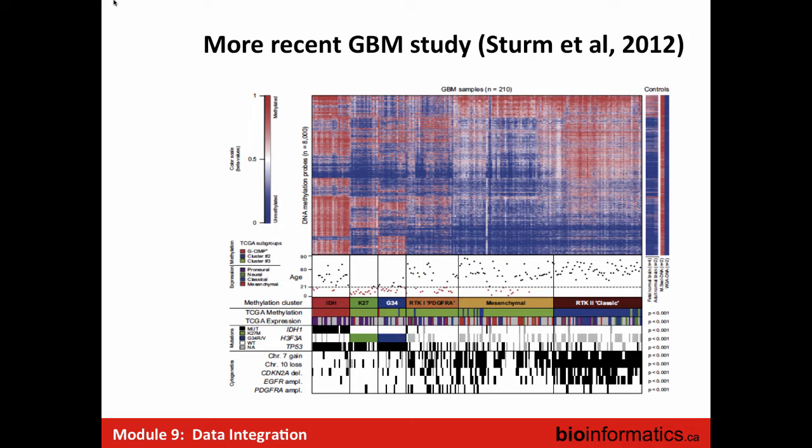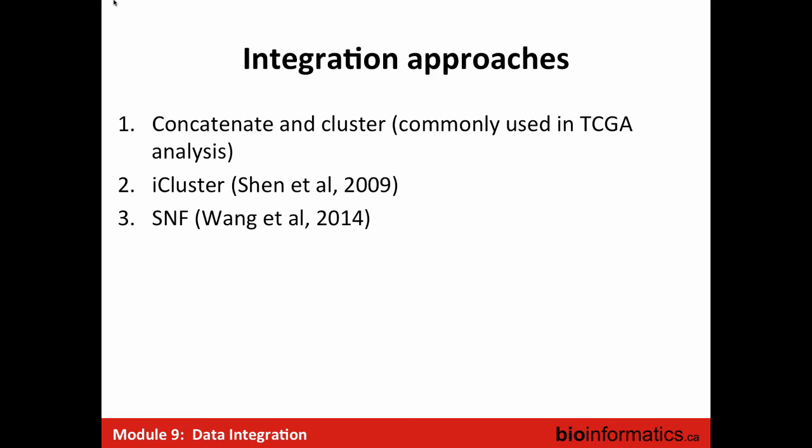So up until 2012–2013, these were papers coming out in clinical literature that had different types of data but were using one data type to drive the analysis — not doing it jointly. Around then, over the last five or six years, people started looking at integration approaches. I'll talk about three commonly used ones: concatenation and clustering, which is by far the most commonly used approach by the TCGA community; iCluster, also quite commonly used, the method came out in 2009; and SNF — Similarity Network Fusion — developed in my lab, published in Nature Methods, and now used in TCGA analysis by the consortium.